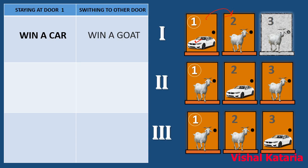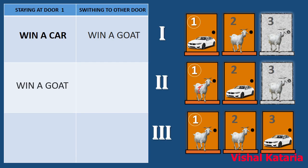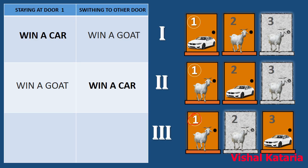In the second case, the car is behind door number two. Monty knows this, so he will never open door number two — he is going to open door number three. If you stick to door number one, you will win a goat. But if you switch to door number two, it's beneficial and you will win a car. In the third case, Monty knows the car is behind door number three, so he'll open door number two. If you stick to door number one you win a goat, but if you switch to door number three, you win a car.